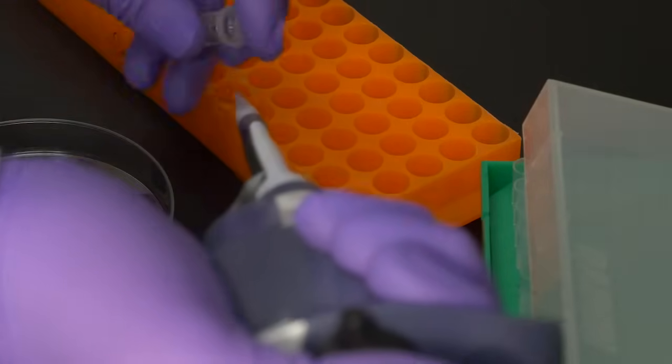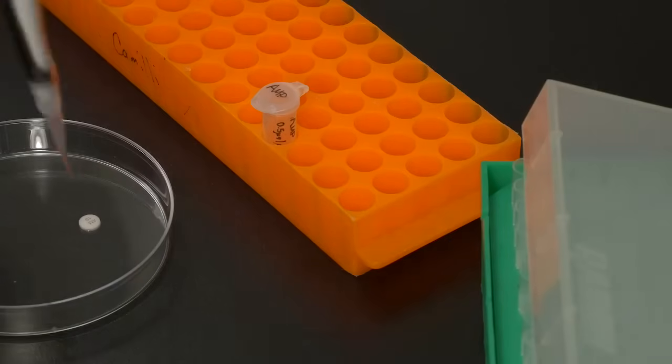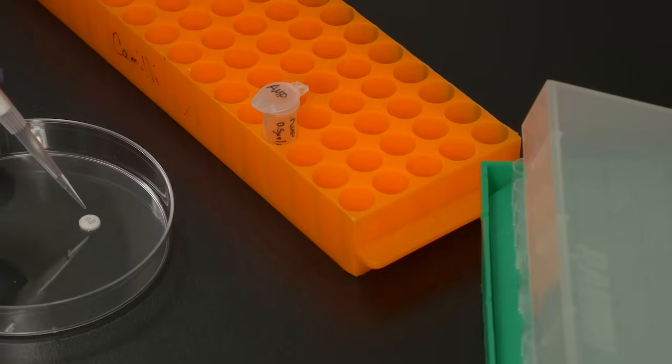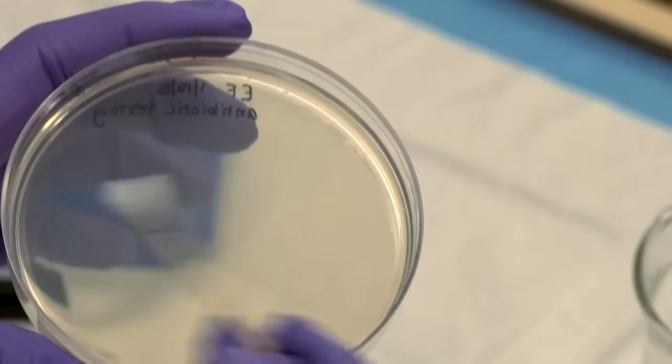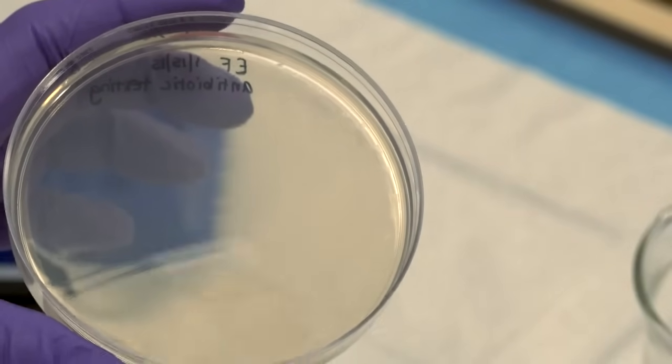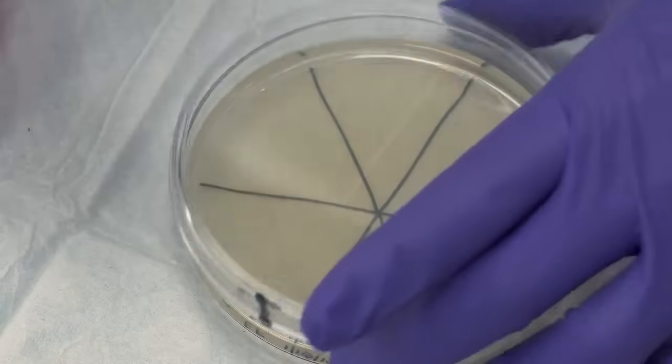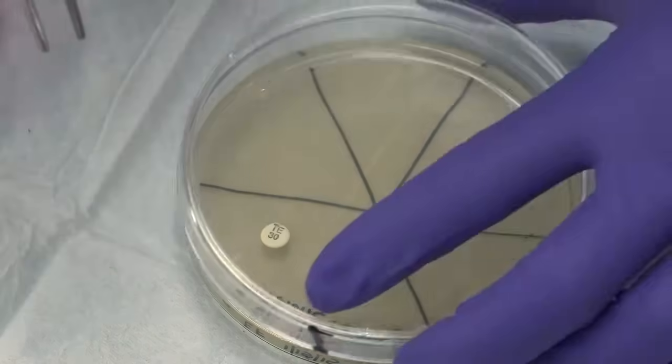We use little paper discs that are soaked in antibiotic. Generally, scientists buy these discs already soaked in the antibiotic. We take the discs and put them on a petri dish that is thick with bacteria. The antibiotic diffuses into the agar while the plate is incubated and stops growth.